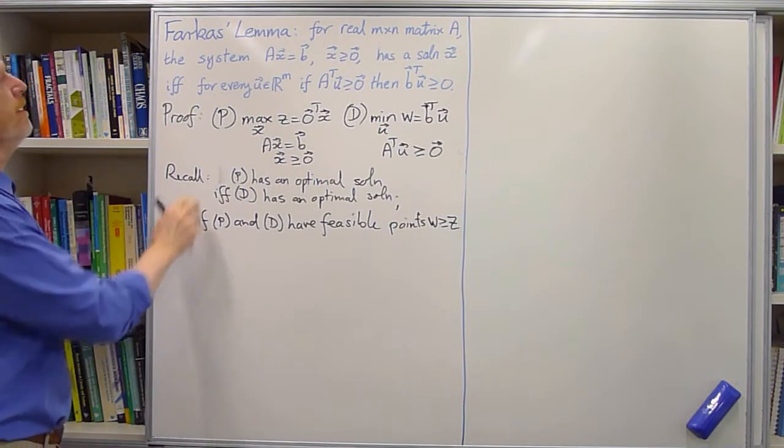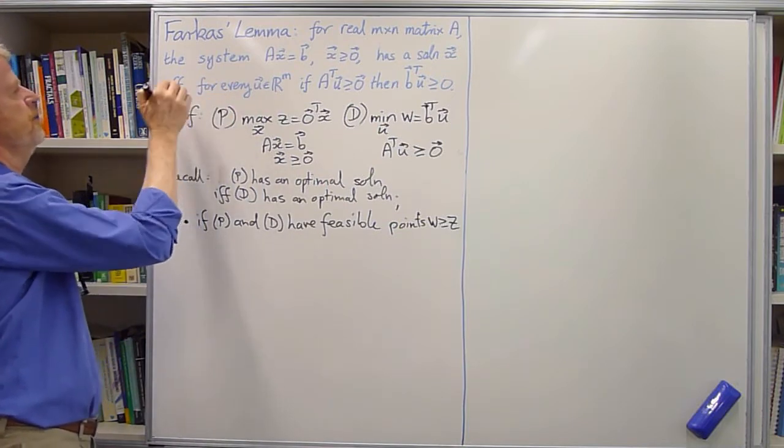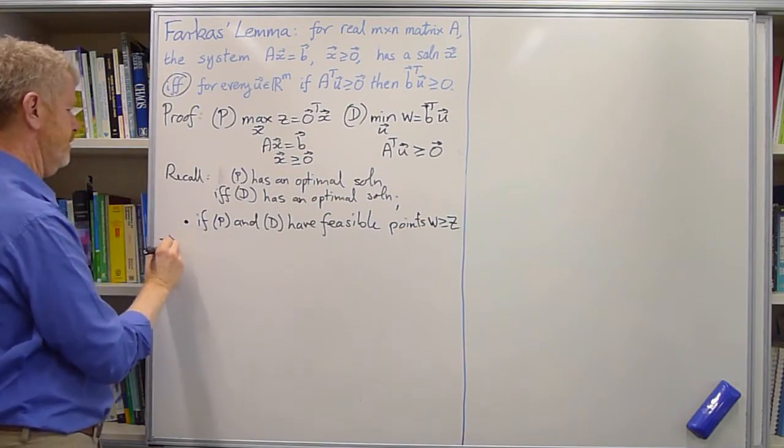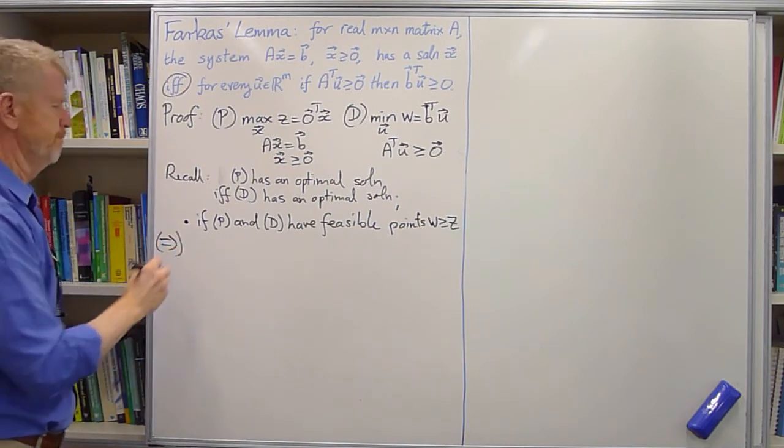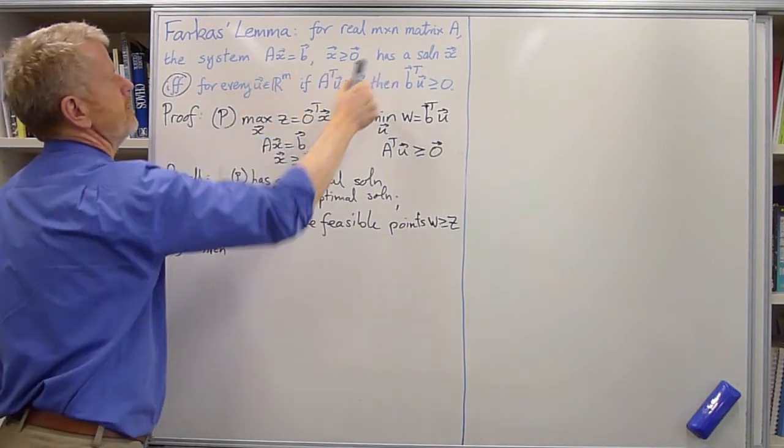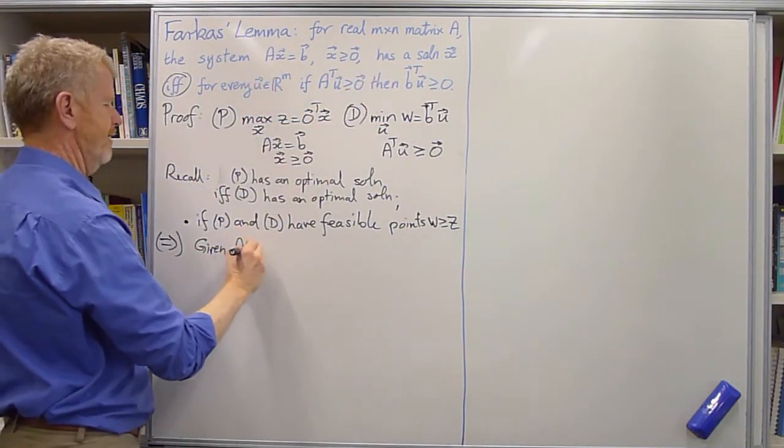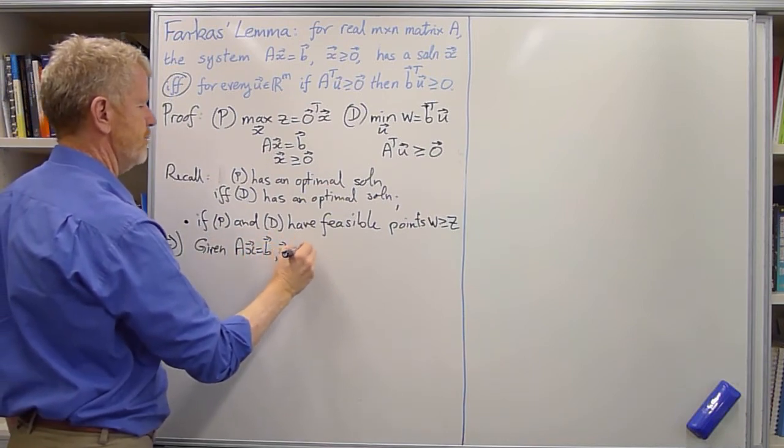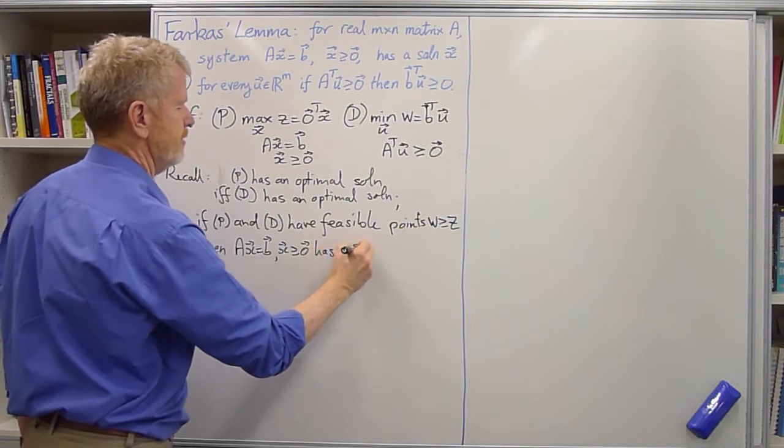Now, how will we do it? We've got to prove this if and only if, so we'll do that both ways. Firstly, let's do it. And we're given this condition that AX equals B, X bigger than or equal to 0, has a solution.